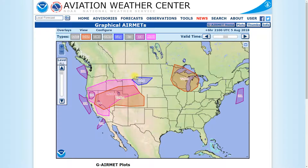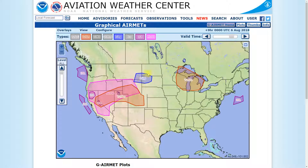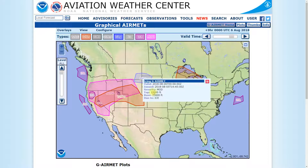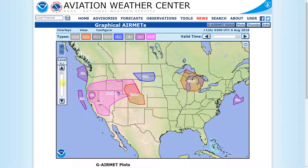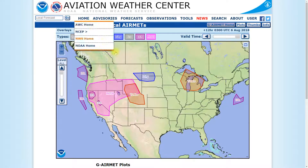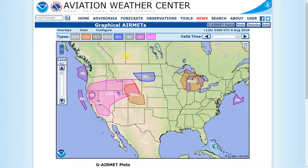Sometime after 1800, that weather is going to begin and continue all the way through the end of the valid period at 2400, or midnight. We can see it actually continues past that — as we go into the future, that same area of icing continues well into the future. What you're going to get out of this map is even more than you would get from your standard AIRMETs. We know our three types of AIRMETs — Zulu, Sierra, Tango — but here we also have low-level wind shear warnings and surface wind conditions.